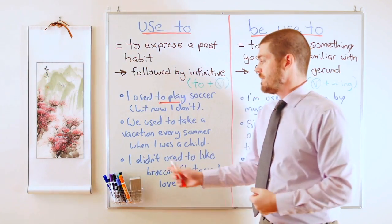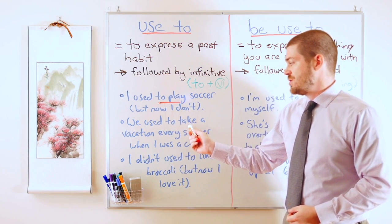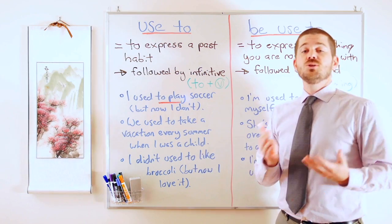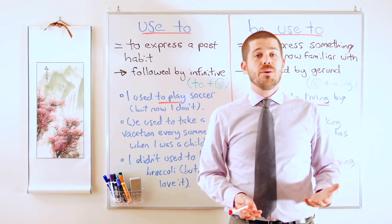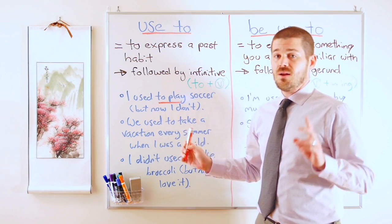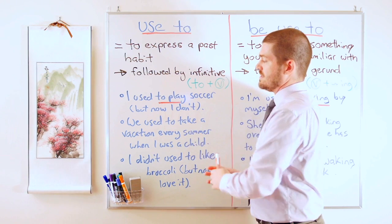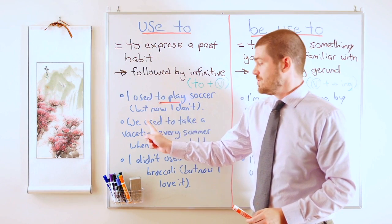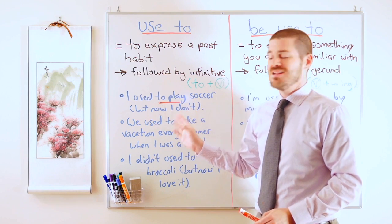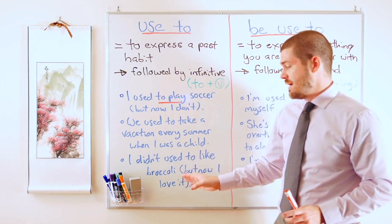Another example: 'We used to take a vacation every summer when I was a child.' Notice 'used to take,' and it says 'when I was a child,' so this was a long time ago. Also note the grammar: 'be used to' is in the present tense, while 'used to' is the past tense. We would not say 'I used to played' or 'we used to took' — those are incorrect.